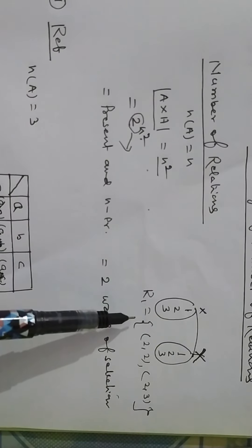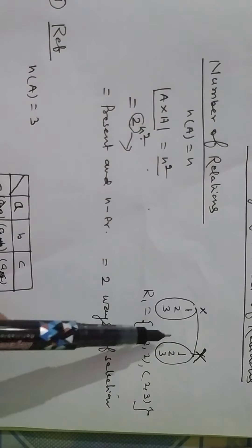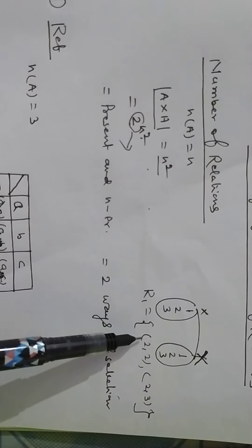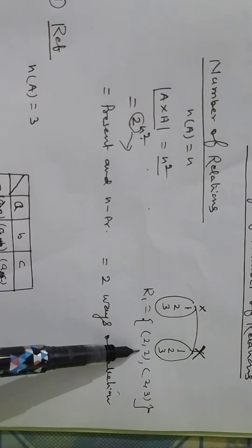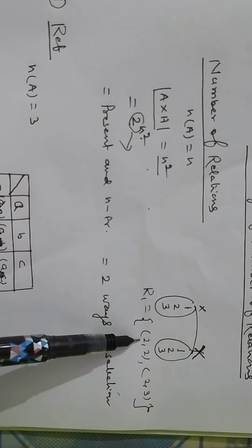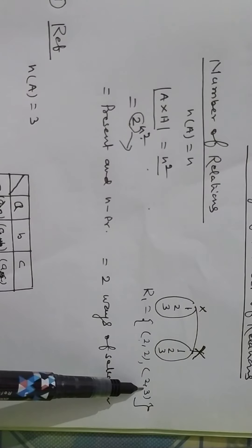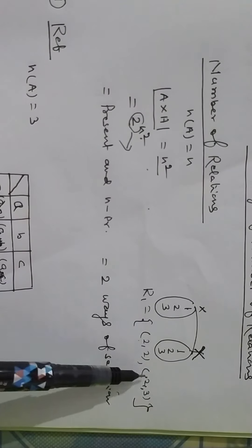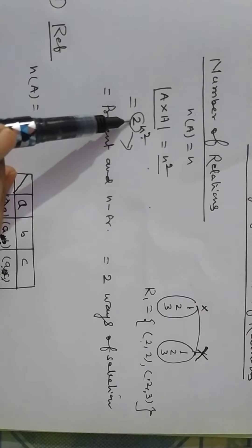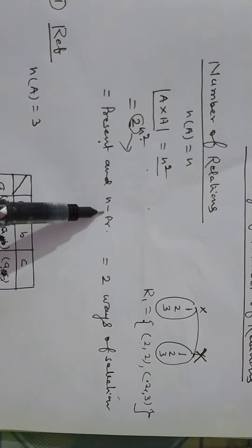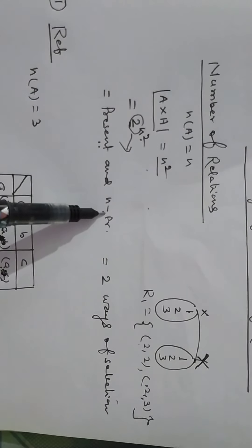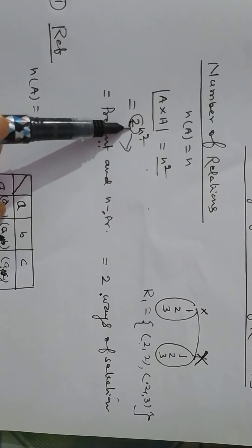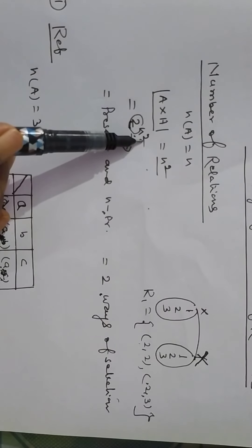If we take the Cartesian product of A with A, this is also known as the universal relation. If you take a pair or you do not take a pair, it will still be a relation. So this base of 2 comes from 'present and not present' — each element is either included or not. So the total is 2 to the power N squared.